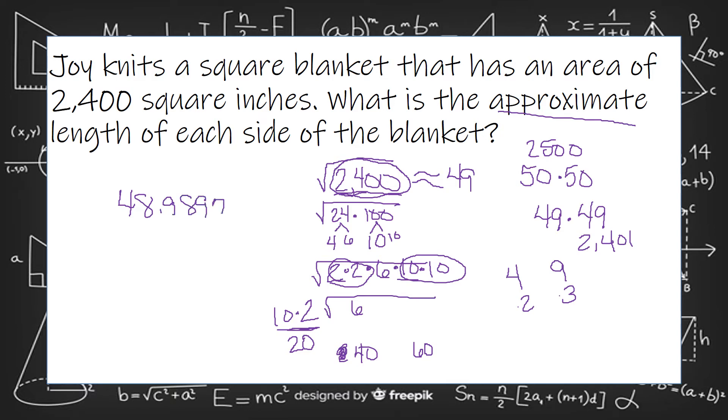It'd be 48 point some odd. And I can always type it in my calculator as 2,400 and take the square root. And it tells me the exact answer is 48.98979. So that is really, really close to 49.